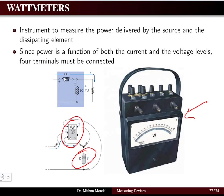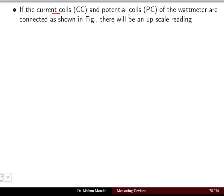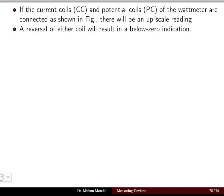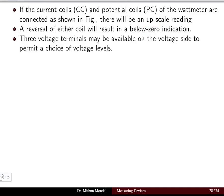The wattmeter has two different types of coils: the current coil and the pressure coil, also known as the voltage coil. When the current coil and potential coil are connected as shown in the figure, there is an upscale reading. A reversal of either coil will result in a below-zero indication, telling you that the connection has to be reversed.